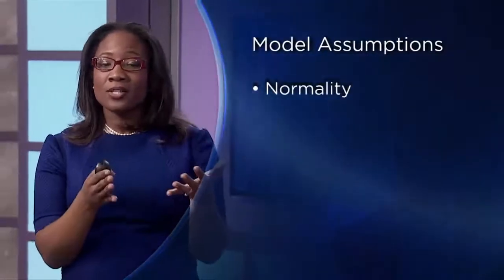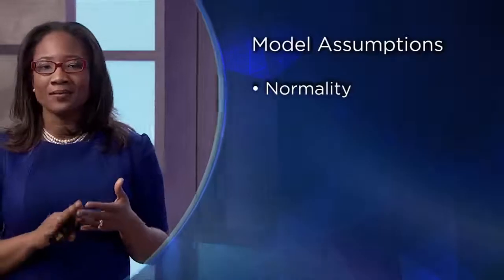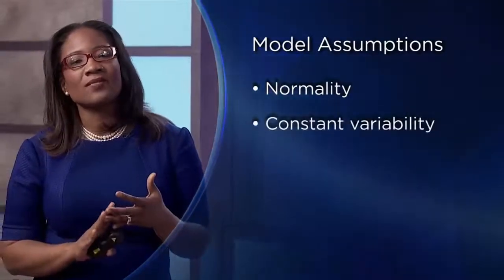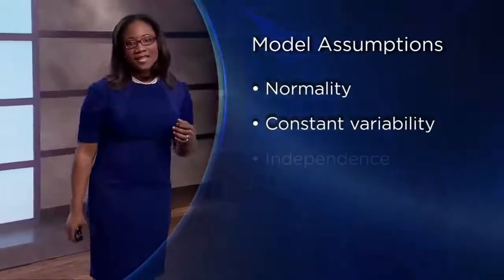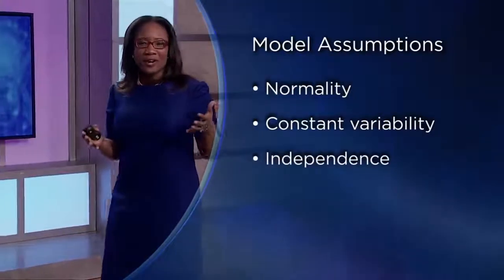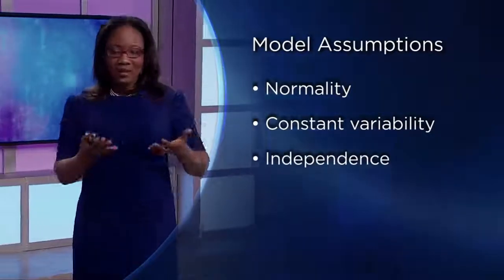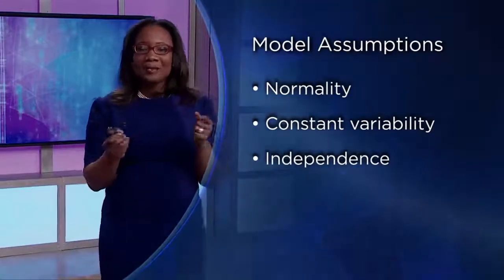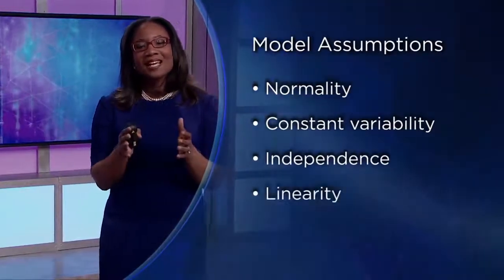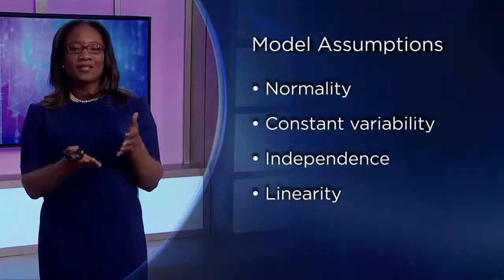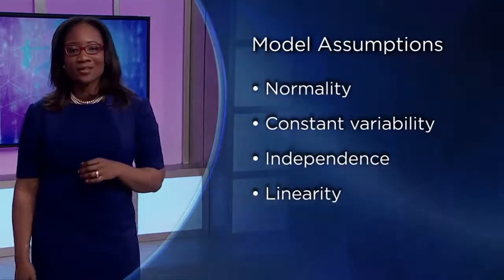We can't forget to check our model assumptions. We assume normality — to check for it, look at a QQ plot of our residuals. Second, check for constant variability — this shows up in our residual plot. Third, for independence, we have to examine how the data values were collected to make sure the study doesn't involve any dependency between data — this is harder to pull from a graph. Lastly, check for linearity — a scatter plot of our data will tell us whether a linear regression is appropriate.